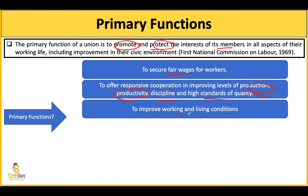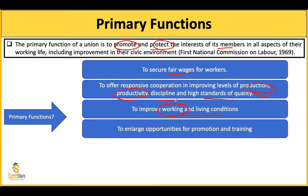साथ ही साथ working and living conditions improve होनी चाहिए। Working conditions में - factories में washrooms होने चाहिए, separate washrooms men और women के लिए, rest place होनी चाहिए। लेकिन living conditions का भी ध्यान रखना है - अगर worker गंदी जगह रह रहा है तो उसके लिए भी trade unions को काम करना है।